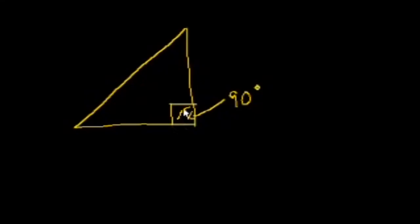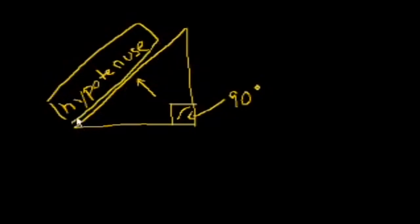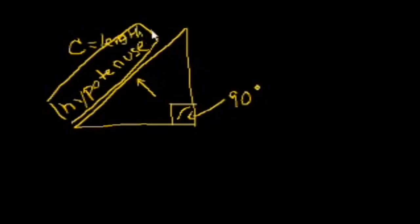Before I throw the theorem at you, let me give you one more definition. If this is the right angle in a right triangle — at 90 degrees — we symbolize that by drawing the angle like a box instead of a curve. The side opposite the right angle is called the hypotenuse. Over time you'll use the term hypotenuse so much that it'll seem like a normal word. The hypotenuse is the side opposite the 90 degree angle, and you'll quickly realize that the hypotenuse is the longest side of the right triangle.